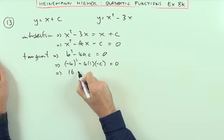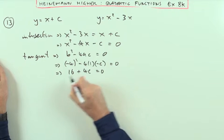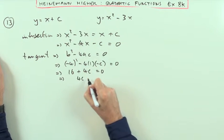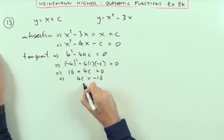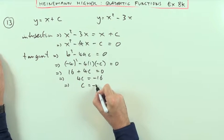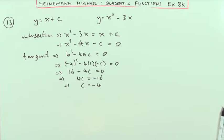So I've got 16 plus 4c equals 0. Usually you can see that c is going to be negative 4. 4c is going to be negative 16 which means c is going to be negative 4 for the first part.